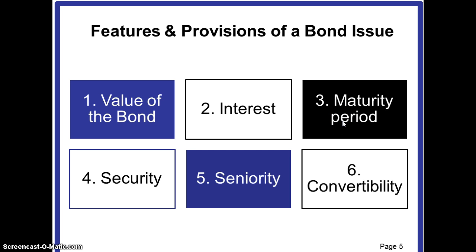A bond also carries a maturity date. All bonds generally have a specified maturity date on which the par value or the face value of the bond has to be repaid. For example, Tasty Food Products Company bonds were issued on January 1, 2012, and will mature on January 1, 2027, so the maturity period is 15 years.